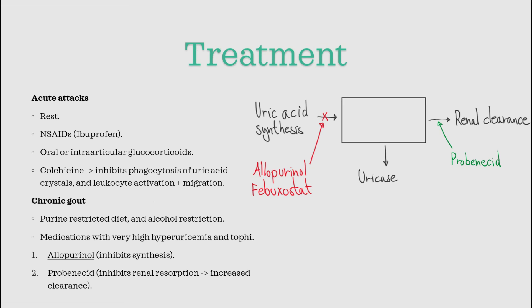For chronic gout, and also in phase 3 of the disease, additional treatment should be given. First, lifestyle changes with alcohol and purine restriction are advised, even though only a few patients actually comply. Secondly, medications to reduce the amount of uric acid should be given. The must-know medication is allopurinol, which inhibits the synthesis of uric acid and is a first-line treatment of chronic gout. A second treatment, given in addition to allopurinol if it is not effective enough, is probenecid. Probenecid inhibits resorption of uric acid in the kidneys, effectively increasing the renal clearance.